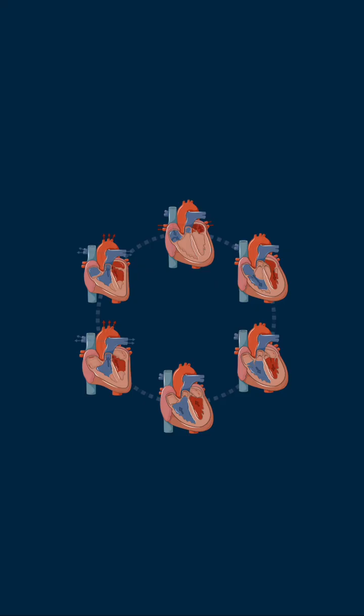The cardiac cycle has two main phases: diastole and systole. Diastole is when the heart relaxes and fills with blood. Systole is when the heart contracts and pumps blood out. Each phase has atrial and ventricular components.